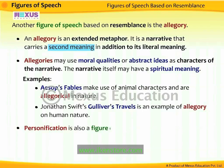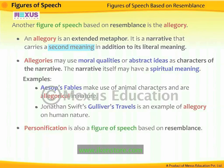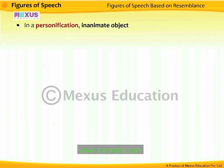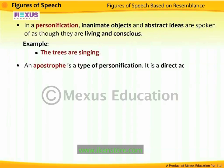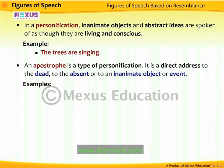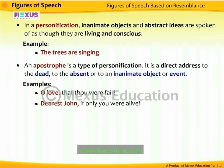Personification is also a figure of speech based on resemblance. In personification, inanimate objects and abstract ideas are spoken of as though they are living and conscious. For example, 'the trees are singing.' An apostrophe is a type of personification — it is a direct address to the dead, to the absent, or to an inanimate object. For example, 'O love, that thou were fair' — love is directly addressed as a person. 'Dearest John, if only you were alive' — the person John is addressed even though he is no longer living.